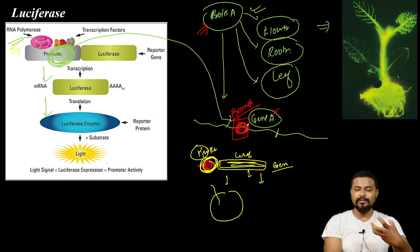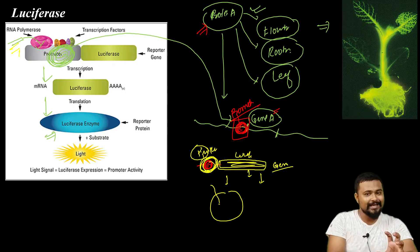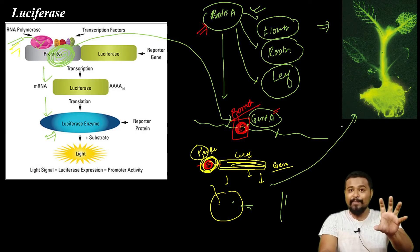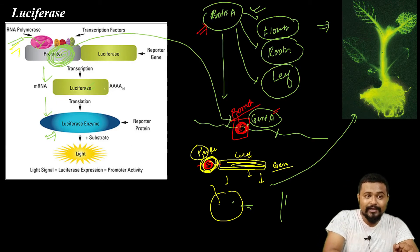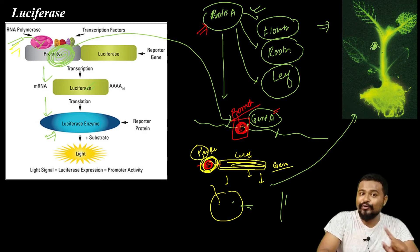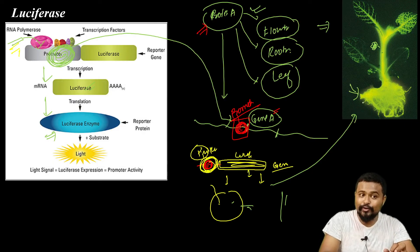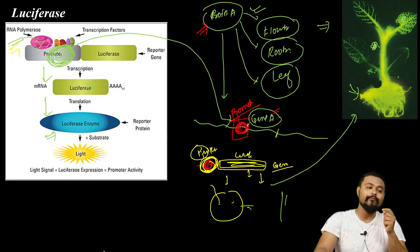This is a protein — the luciferase enzyme. What does the cell produce? This plant expresses the luciferase gene. The flower glows green in color. Protein A expressed in flower — not absent. Protein A expressed in root — not absent.